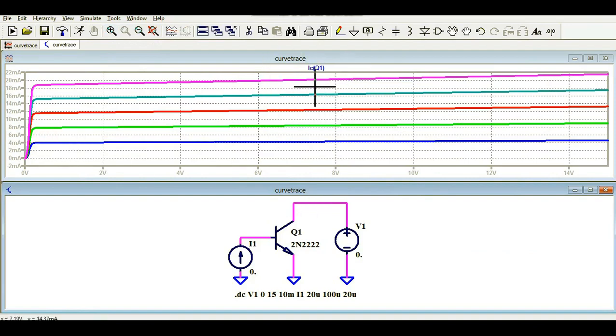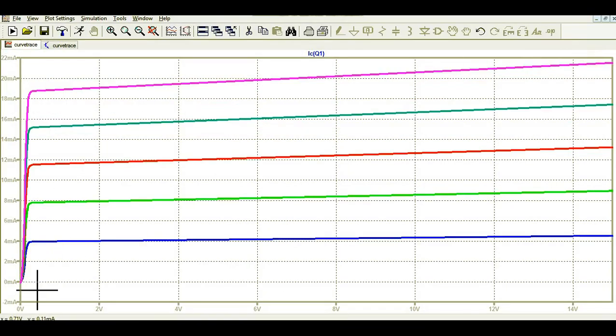You can see different traces here. You can see here IC Q1. This is operating point and you can see here the x-axis shows the value of VCE starting from 0 volt up to here somewhere 15 volt and you can see the multiple values of current starting from around 4 milliampere to this point around 20 milliampere or 18 milliampere.